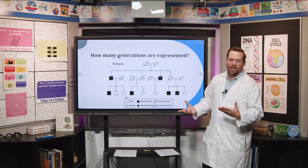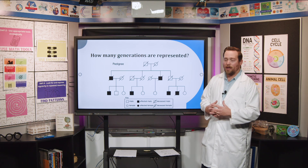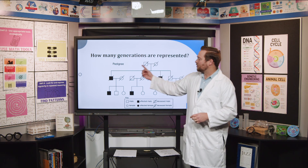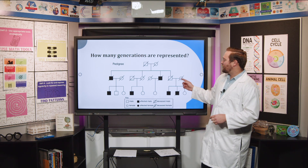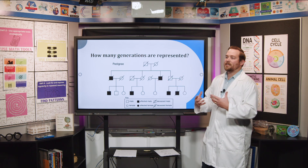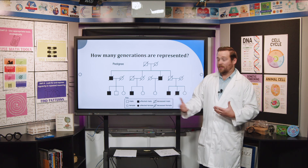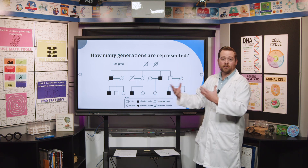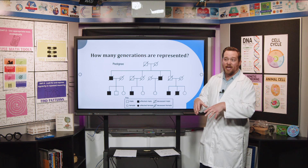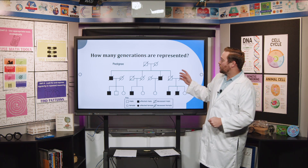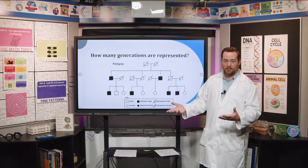Something else worth knowing: you might be asking yourself what the little lines through the shapes mean. If there's a line through a shape, that just means that person is deceased. They were alive, had relationships, married and had children, but when the pedigree is made, they are no longer alive. So a shape with a line through it means that individual is deceased.